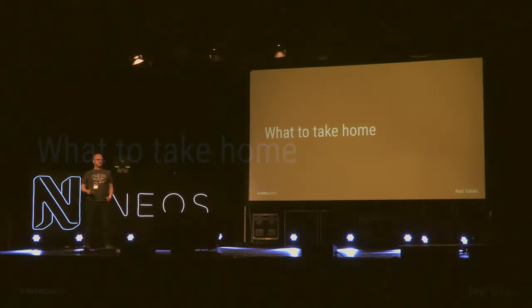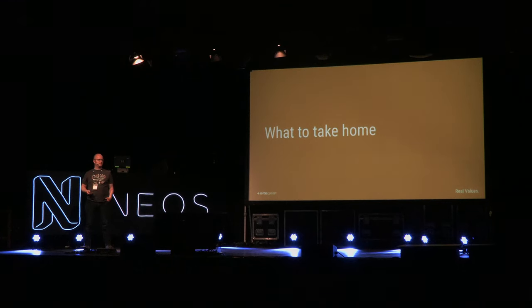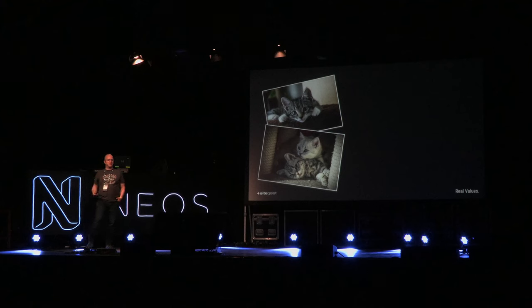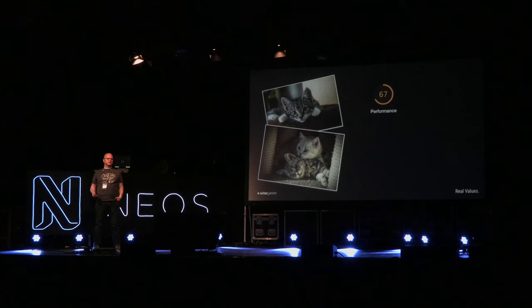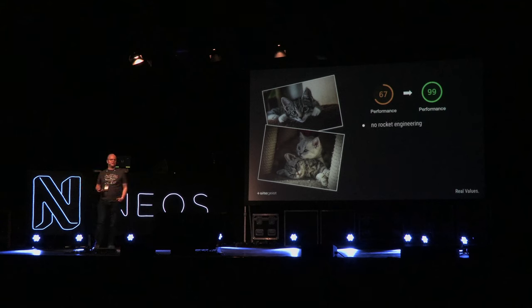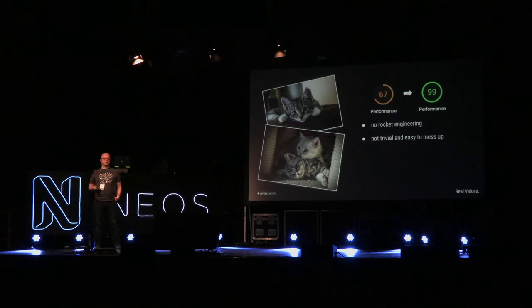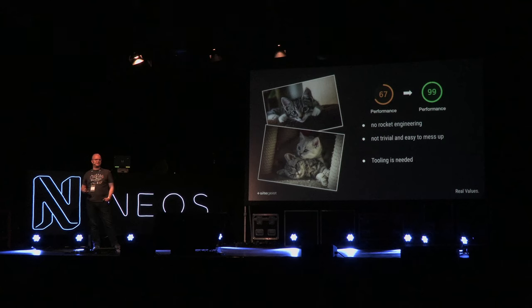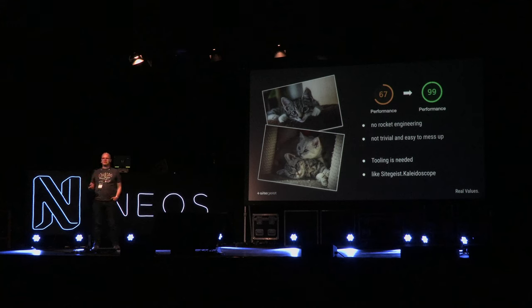What to take home? Caring for responsive images often makes the difference between mediocre and actually good performance. Luckily, there is no rocket engineering involved, but the topic is non-trivial and easy to mess up. Tooling can help to understand the behavior and make generation of needed URLs easier. Kaleidoscope is such a tool — you can use it if you like it. It is one of the packages we at Zeitgeist use in every project, so we will keep maintaining it anyway.